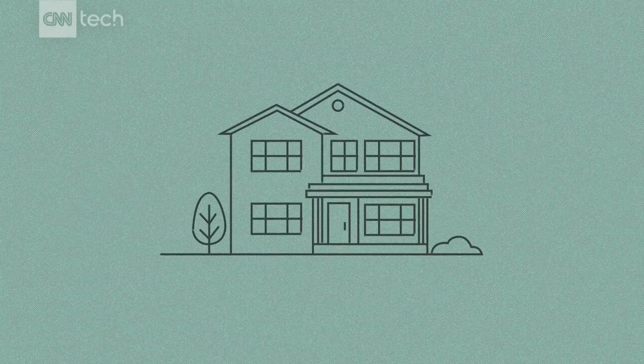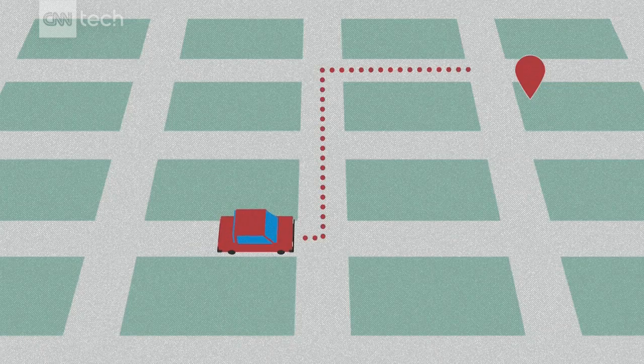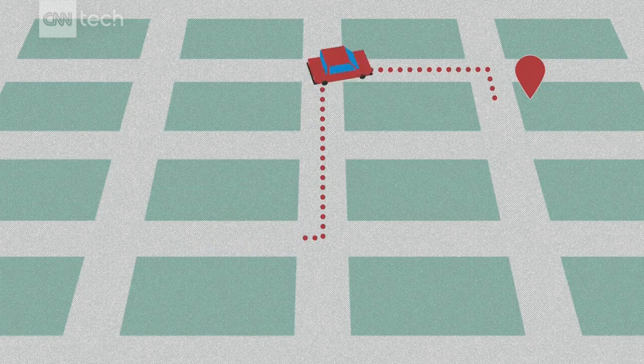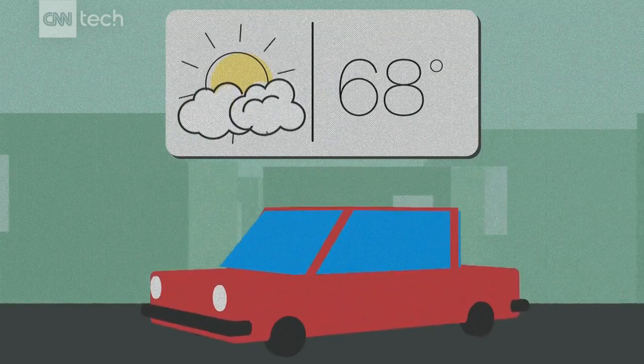Next, you pick a listing you like, and you drive over to take a look. If you use GPS to get there, you're actually being guided by federal data. If you check the weather before you go, you're checking federal climate data.